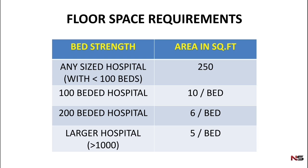If the hospital is large — that means more than 1000 beds — then each bed should get 5 square feet. So for more than 1000 beds, the floor space is 5 square feet per bed. For example, a 4000-bedded hospital would have 5000 square feet of floor space.